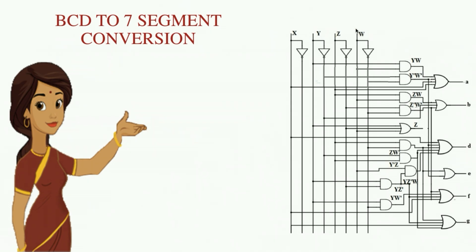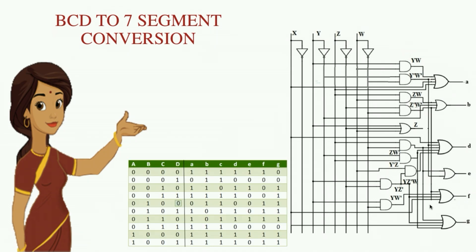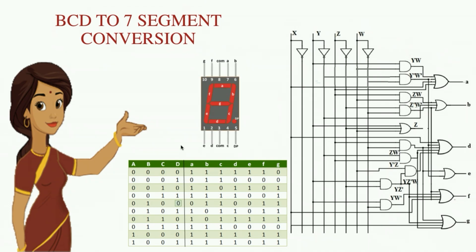Now we are going to perform BCD to seven segment conversion. We provide a BCD input of four bits and obtain the corresponding seven segment display bits. This is the truth table and this is how the seven segment display looks. The output 'a' through 'g' connects to the corresponding segments of the display. For example, a BCD input of 0001 will display the digit one.